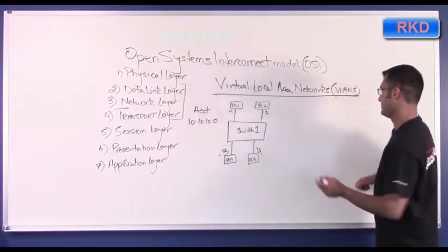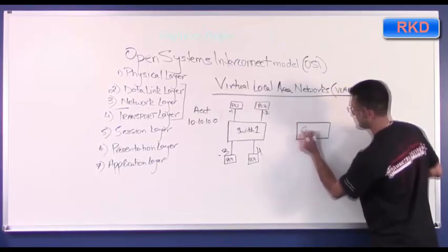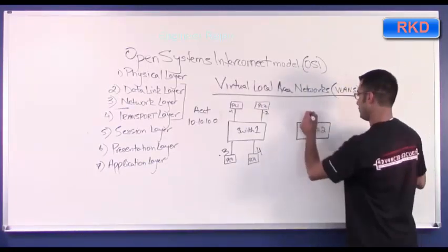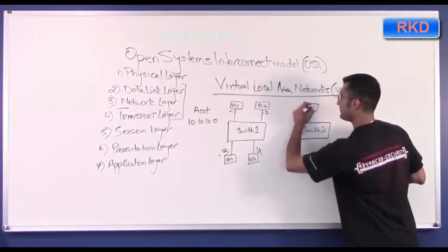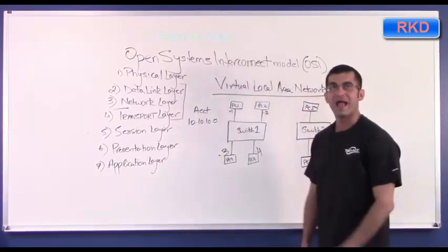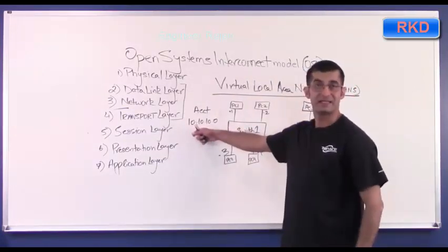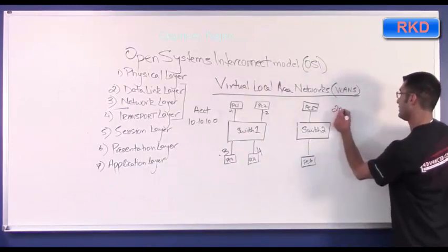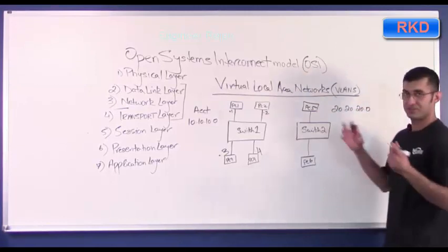Now suppose the same company also has a management department. This is Switch 2, and there are two people in management. We'll call them PC5 and PC6. The management department would have a different IP addressing scheme, not 10.10.10.0—it would be, let's say, 20.20.20.0. This is just for example's sake.